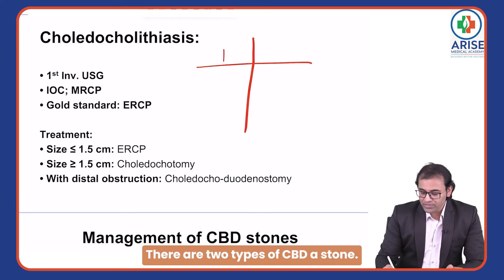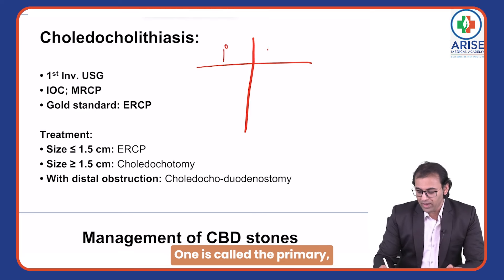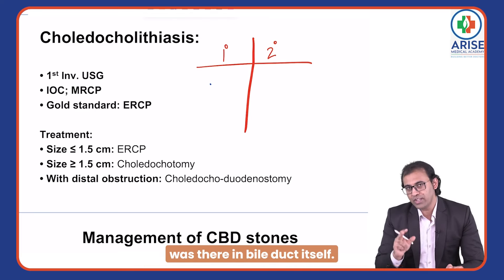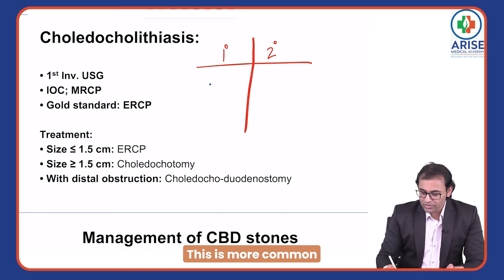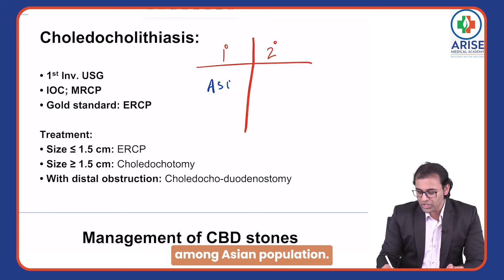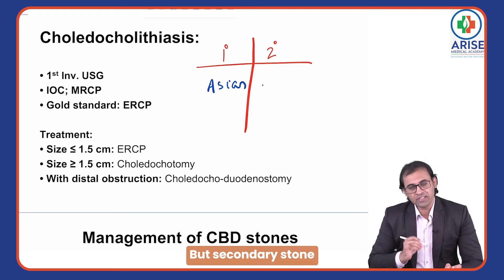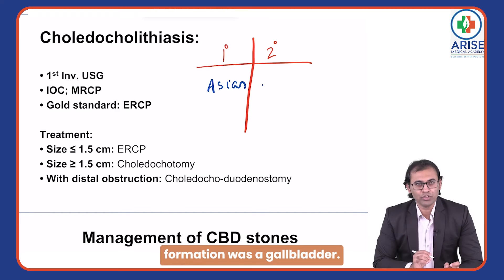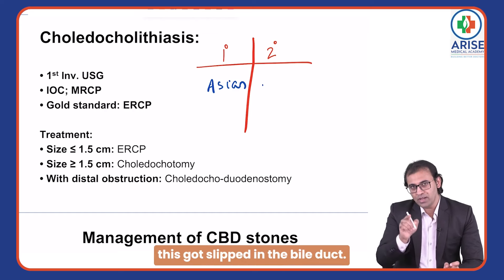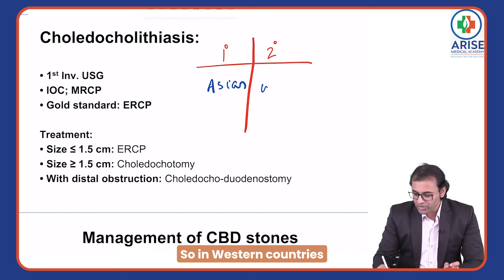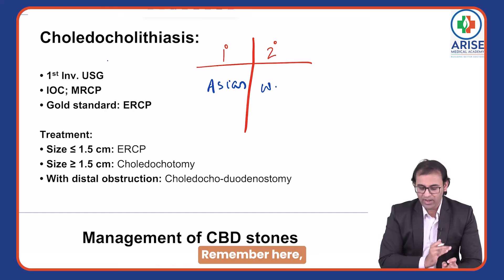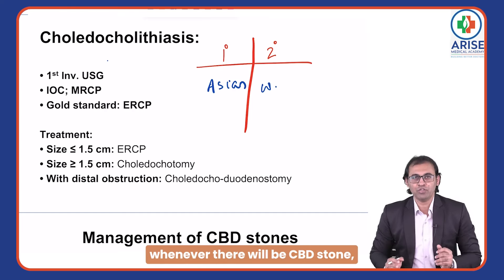There are two types of CBD stones: primary and secondary. Primary stones form in the bile duct itself and are more common among the Asian population. Secondary stones originate in the gallbladder and slip into the bile duct; these are more common in Western countries.